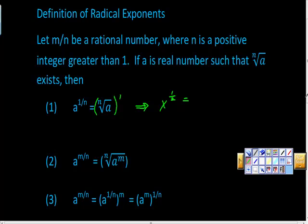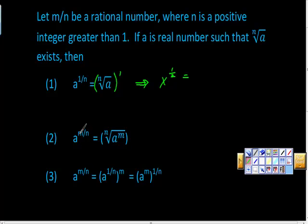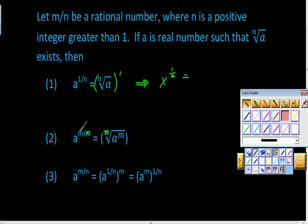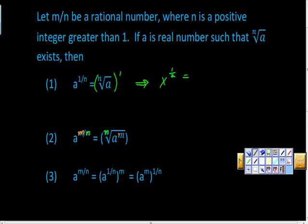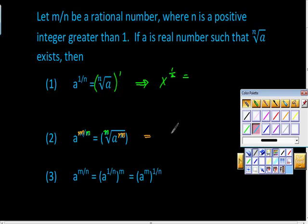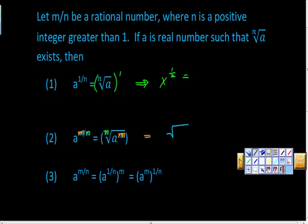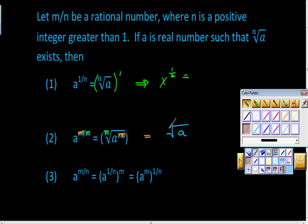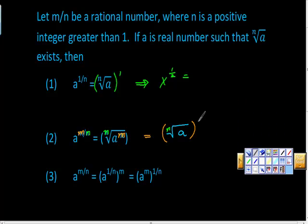So, okay, moving on. Also, rule number two, that a^(m/n) is equal to, right, the nth root. I said that the denominator would be the index, and it is, isn't it? And the numerator is the power. That's the power. Raised to the nth power.